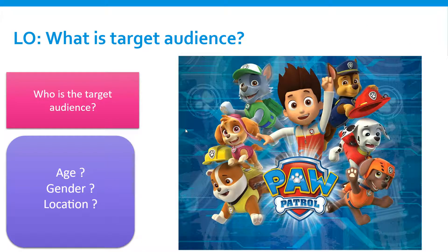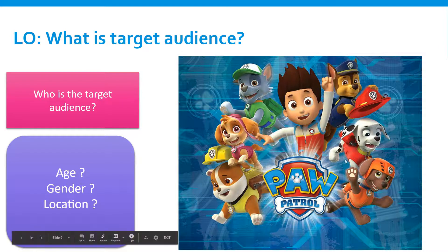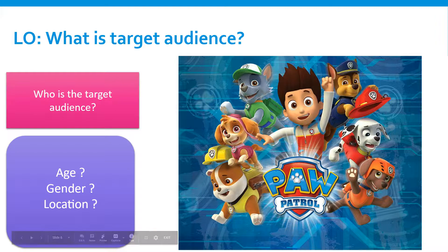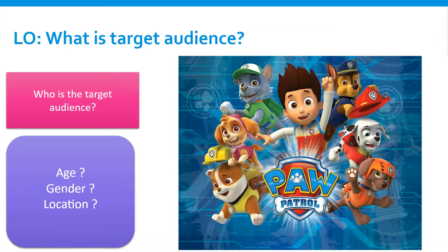Let's look at two examples. Who do we think the target audience for this is? This is Paw Patrol — it's a great TV show. The age is probably children, maybe between three to seven. Gender — I think it's both male and female. Location — we need to think about what countries have Paw Patrol available and whether they translate it into different languages.